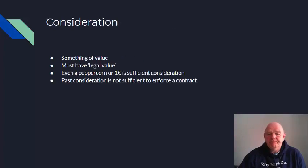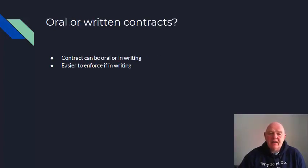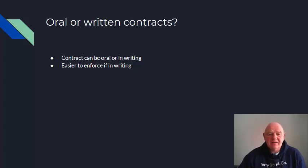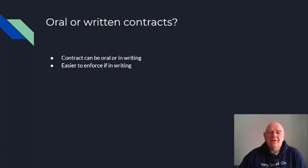Contracts can be oral or written. It is easier to enforce a contract if it's in writing because the terms and conditions are clearly ascertainable. However, if you go into a shop and buy a litre of milk, there is no written contract, but you do have a contract and you are protected by contract law and by statute. Implied terms — and even express terms courtesy of statute — would include that goods sold are of merchantable quality and fit for purpose. You can sue for breach of contract if anything arises.